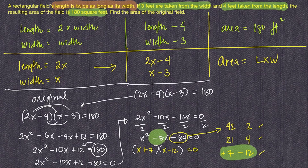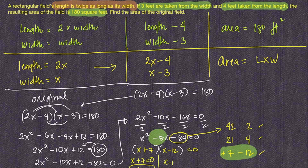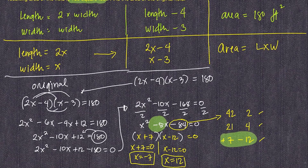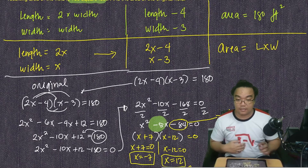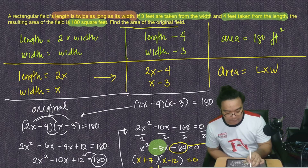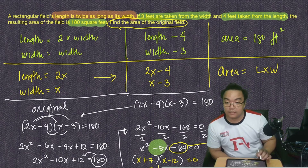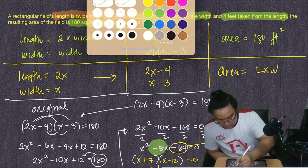Setting each factor equal to zero: x + 7 = 0 gives x = −7, and x − 12 = 0 gives x = 12. Since we are dealing with dimensions, we accept only the positive value. Therefore x = 12.